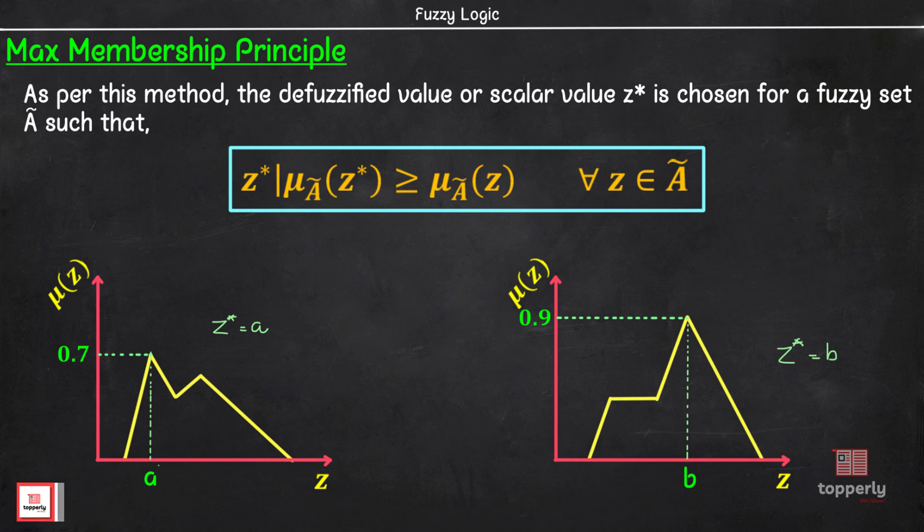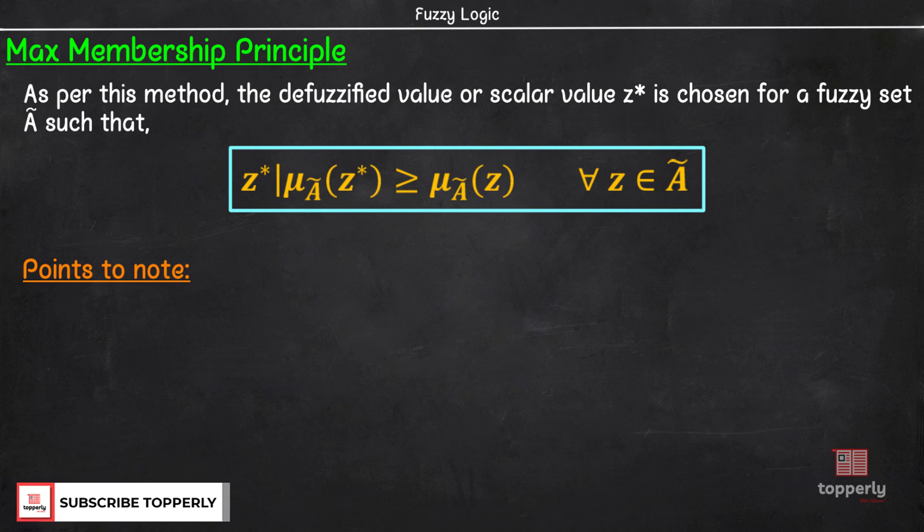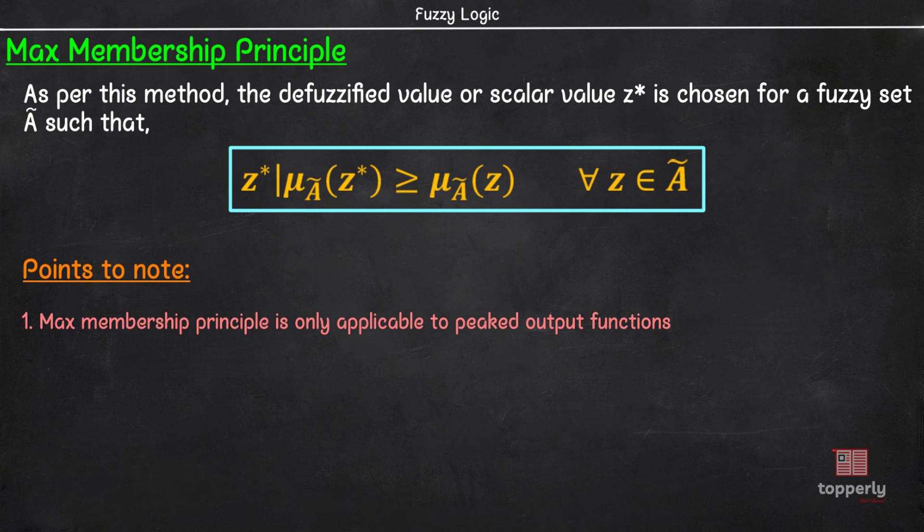Now two things to take note here are: this method is applicable only to peaked output functions. That is, functions with a single peak value. Reason for this is self-explanatory. A defuzzification method should always result in a unique value for z*.